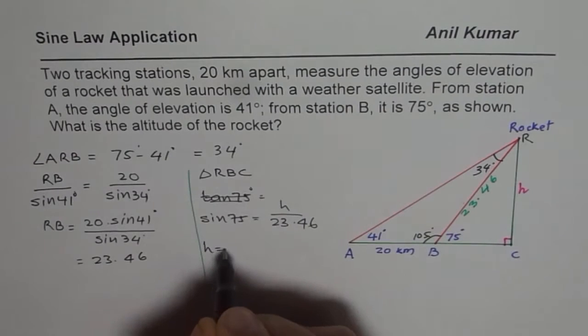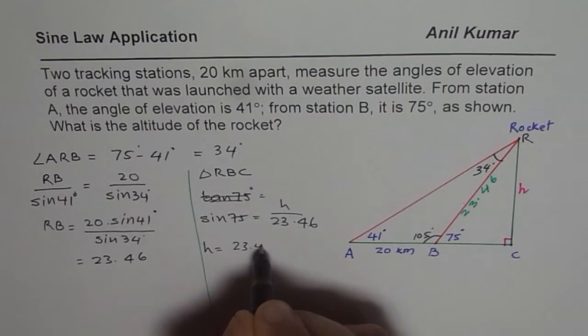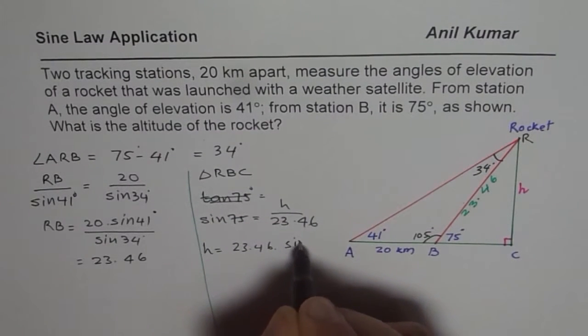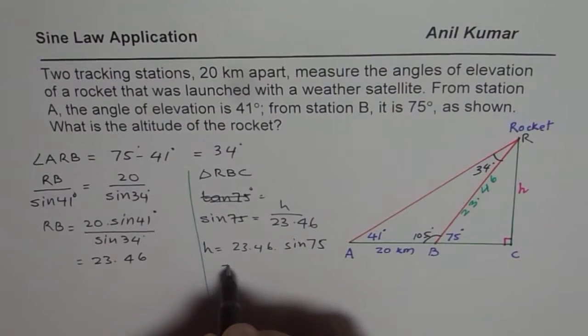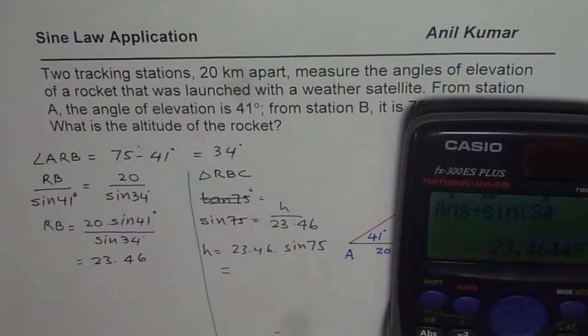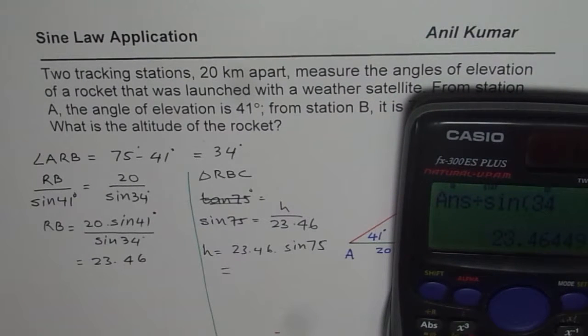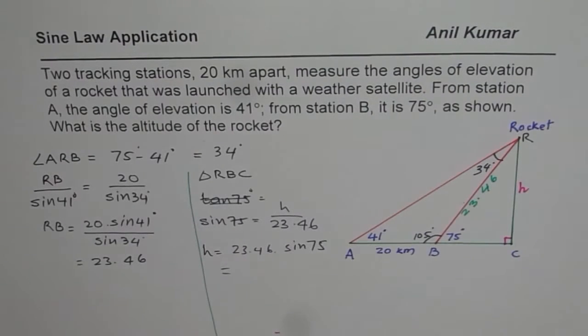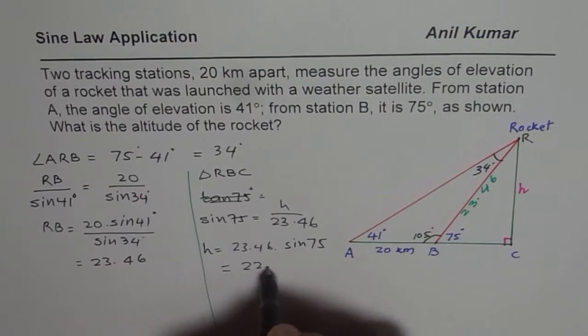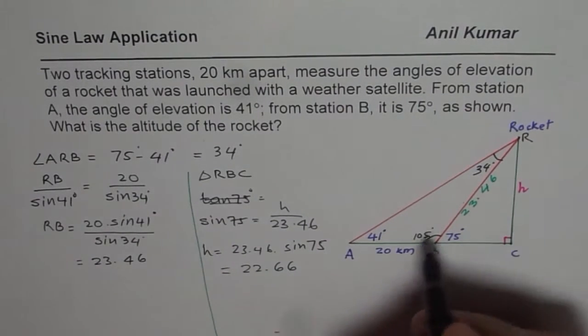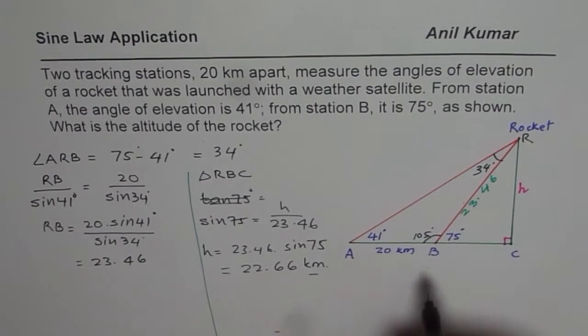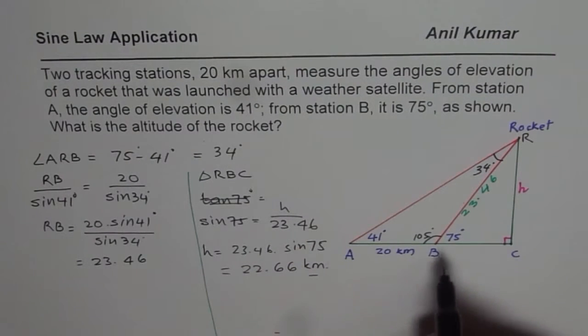So h is equals to 23.46 times sine of 75. Let's use the calculator to find the answer. So we already have the length of the hypotenuse, multiply this by sine of 75 degrees and we get 22.66. So it is 22.66 and the units are kilometers. So that becomes the answer for our question.